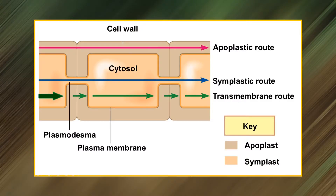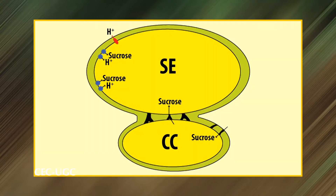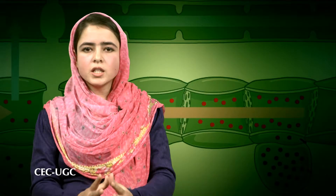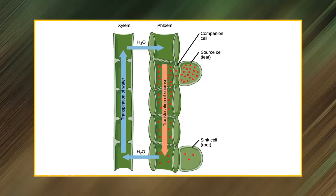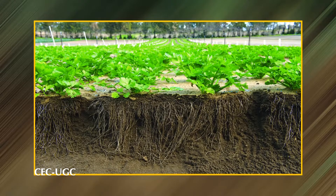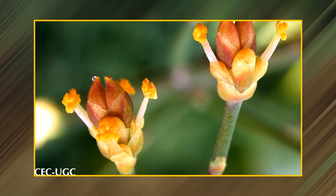Phloem unloading represents a series of cell-to-cell transport steps transferring phloem mobile constituents from phloem to sink tissues or organs to fuel their development or resource storage. Phloem unloading may occur through the symplast or plasmodesmata directly into the sieve element companion cell complex. Alternatively, sucrose may be transported across the mesophyll cell membrane into the apoplastic space. The export of photoassimilates through phloem and their delivery to recipient sink cells is the final step in photoassimilate transport from source to sink.